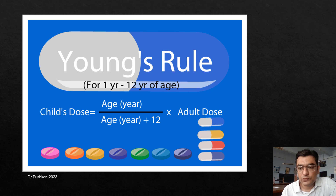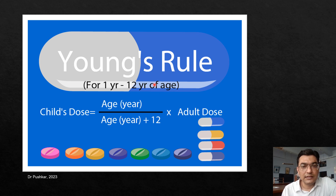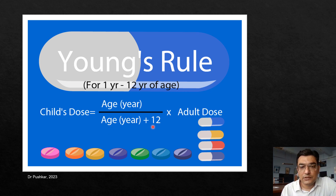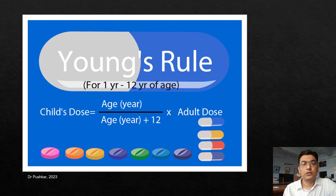The next rule is Young's Rule, also very important. If you do not have the weight but know the child's age, and the age is between 1 and 12 years, you can use this formula: Child's dose equals age in years divided by (age in years plus 12), multiplied by the adult dose. Clark's Rule and Young's Rule are the most commonly used rules.